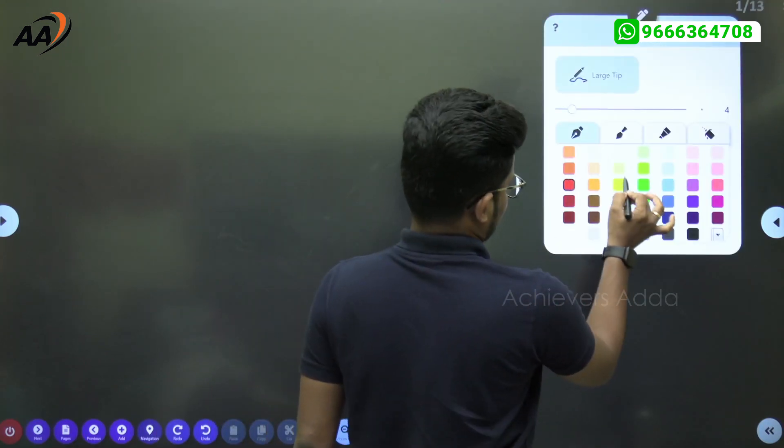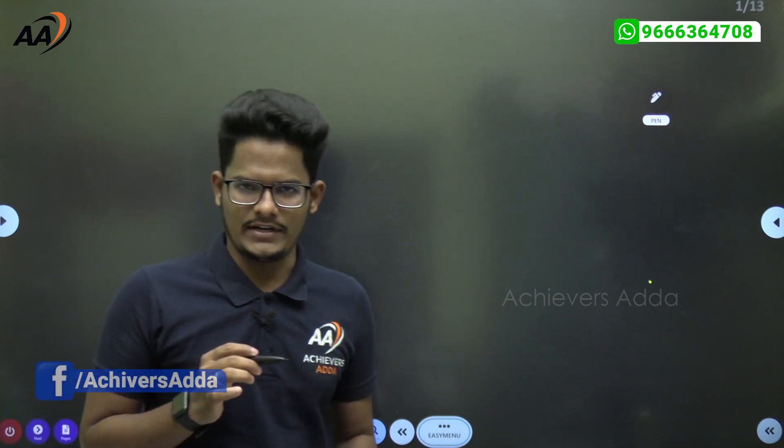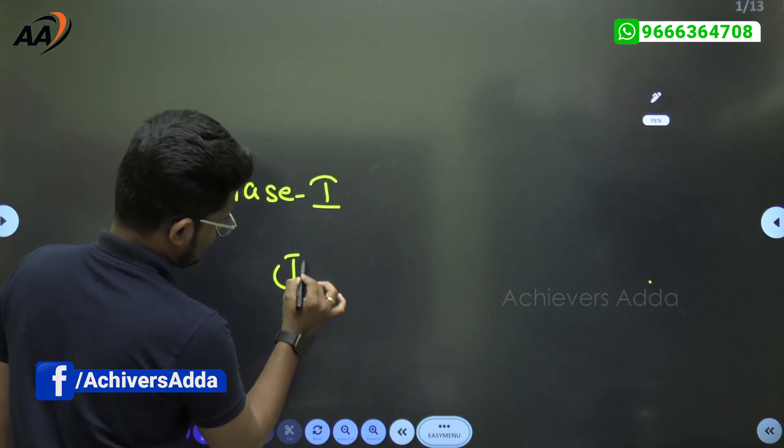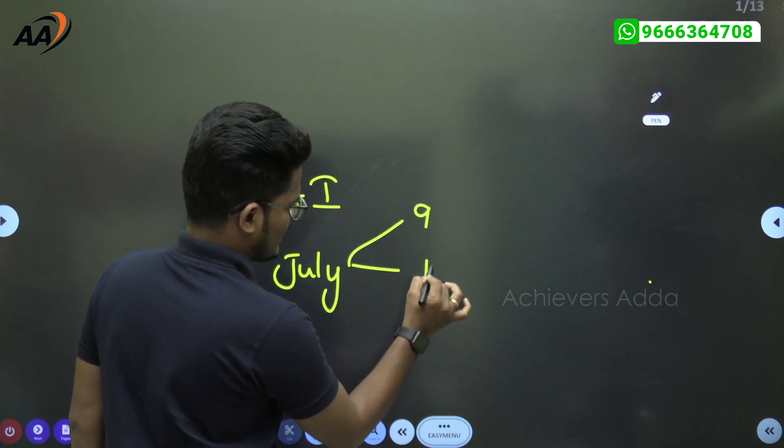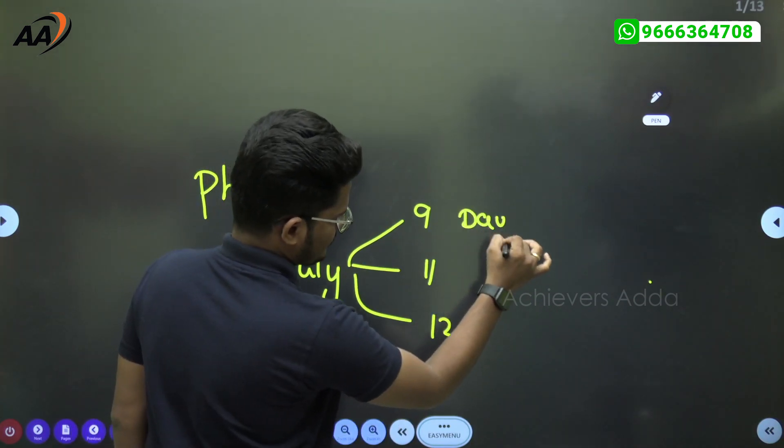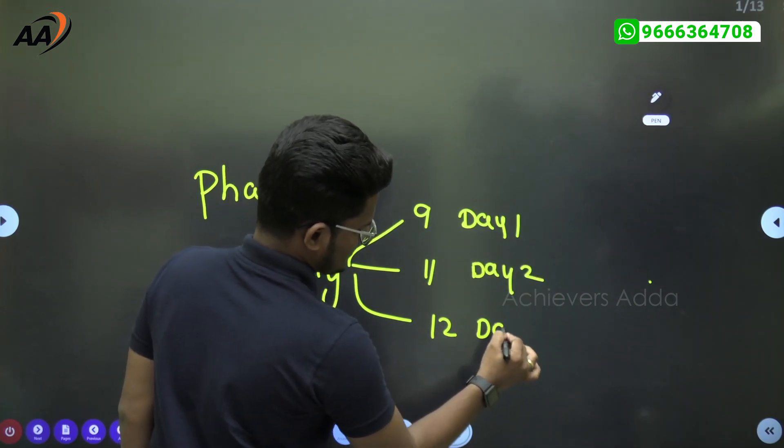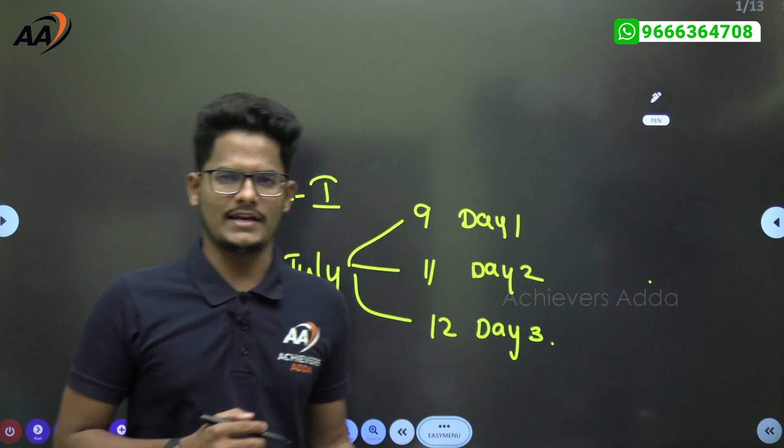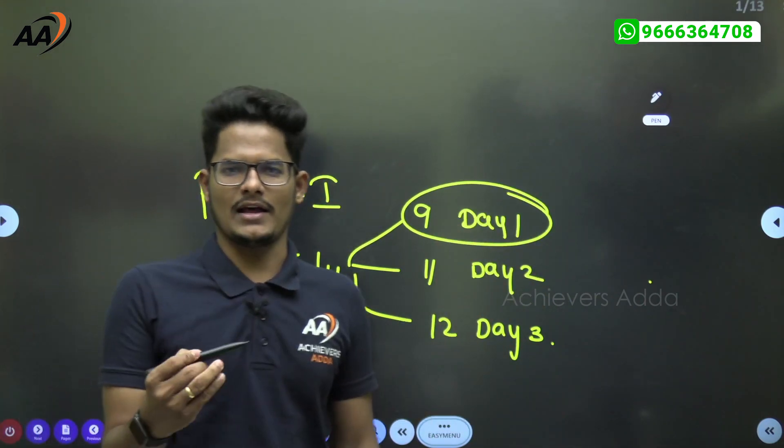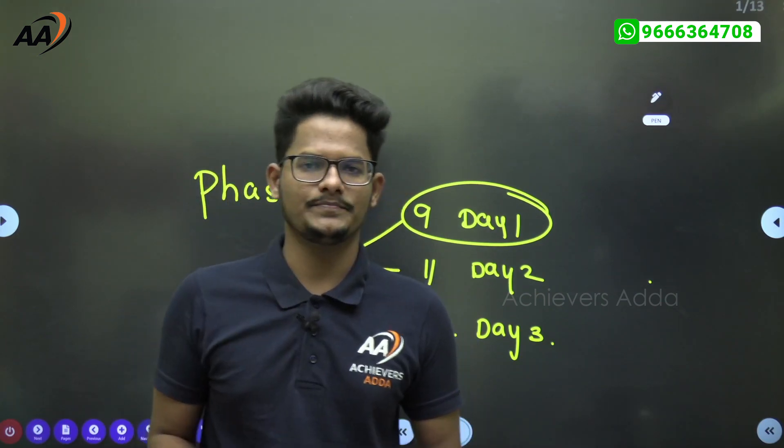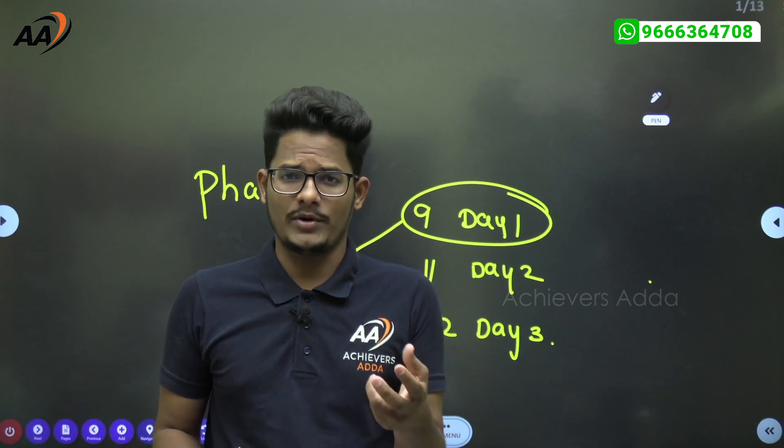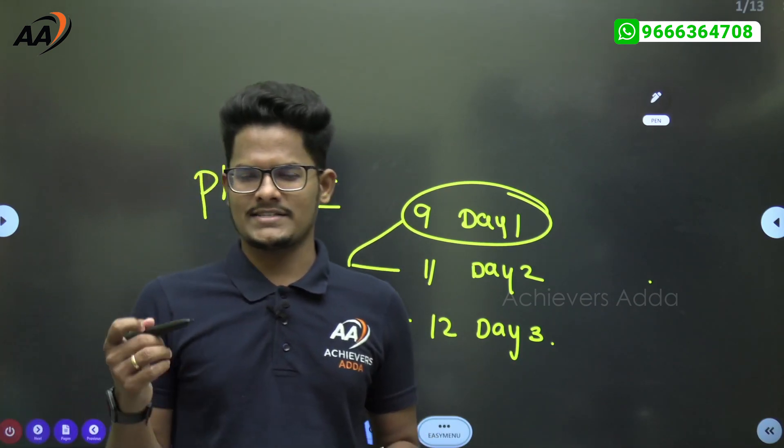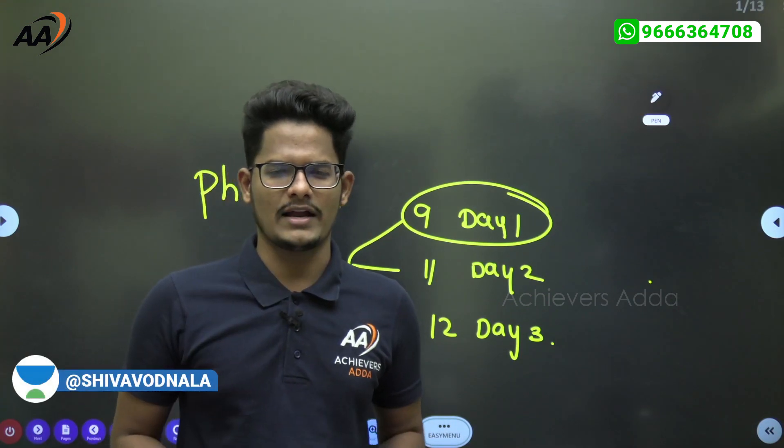In this video, I will be discussing the UGC NET 2022 phase one examination, which happened in July month - July 9th, 11th, and 12th. These three days various subjects were completed. I will be discussing each day's paper analysis, what questions were asked based on the memory of students, and what concepts have been repeated. Let's start with the 9th of July 2022 question paper analysis.